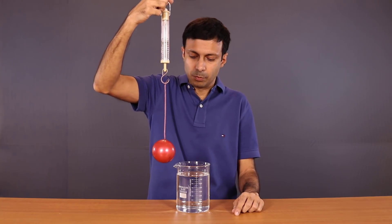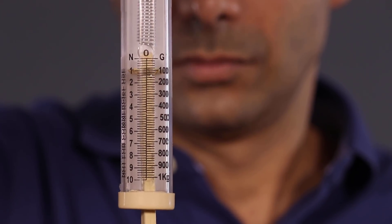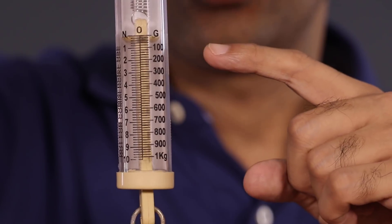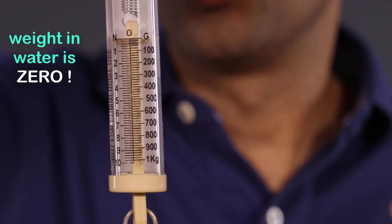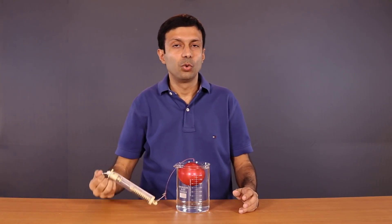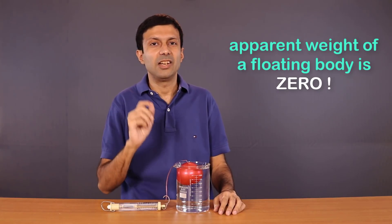Now let me lower this ball in water. And what is the reading of the spring balance now? That's right, it's zero. Or this floating ball is weightless in water. And that's true for any floating body that you see around you. A floating body has zero apparent weight.